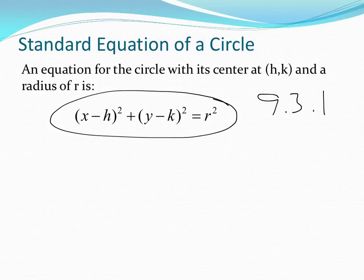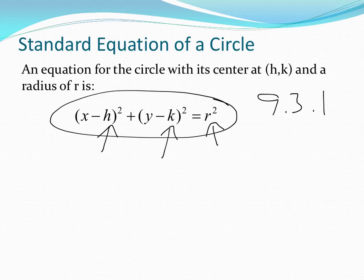Let's write this one down in our notes. First off, h k used to be the vertex, now it's the center, but it's still h goes with the x and k goes with the y. R will be our radius, which we all know what that is when we're talking about circles.